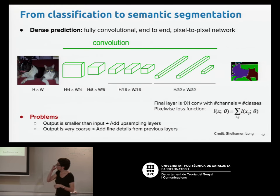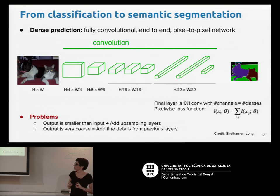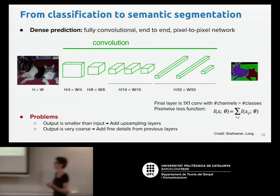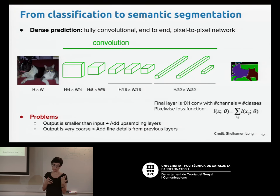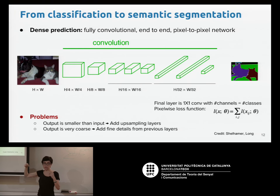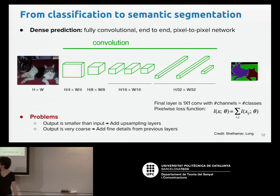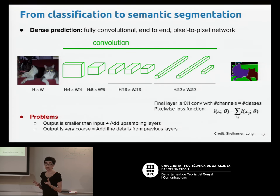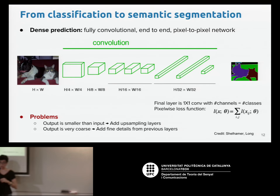With a fully convolutional network, there are a few changes needed. If using a net trained on ImageNet, we need to change the last layer — replacing it with a 1×1 convolution with channels equal to the number of classes (21 for Pascal). We also need to use a pixel-wise loss function. However, there are two problems: the output is usually smaller than the input due to pooling operations, and the output is very coarse. We'll see solutions for both.